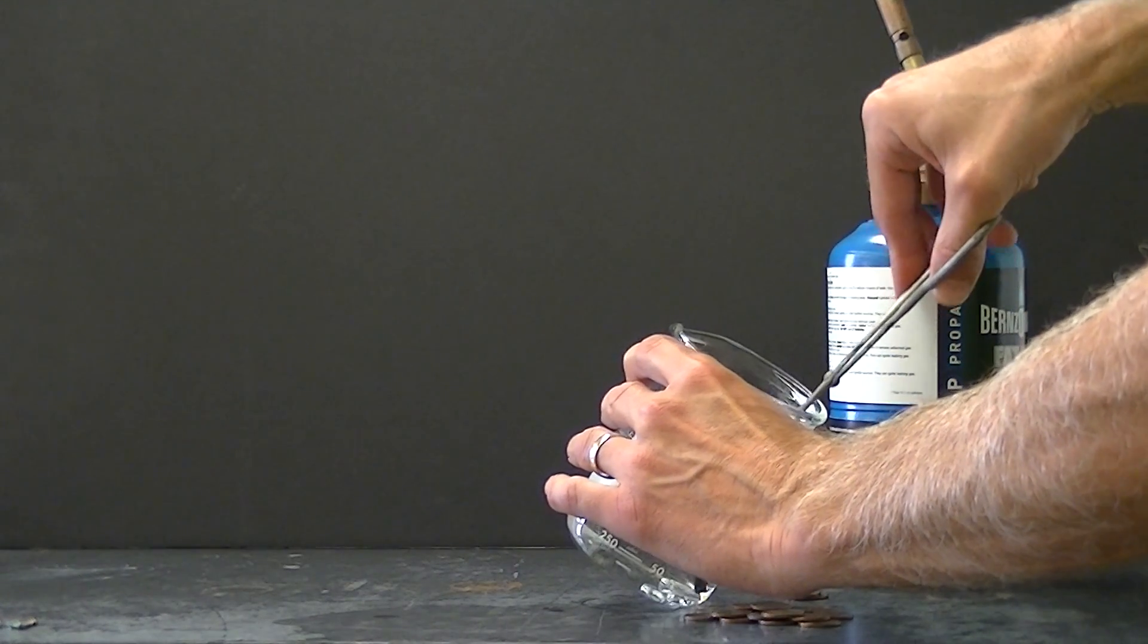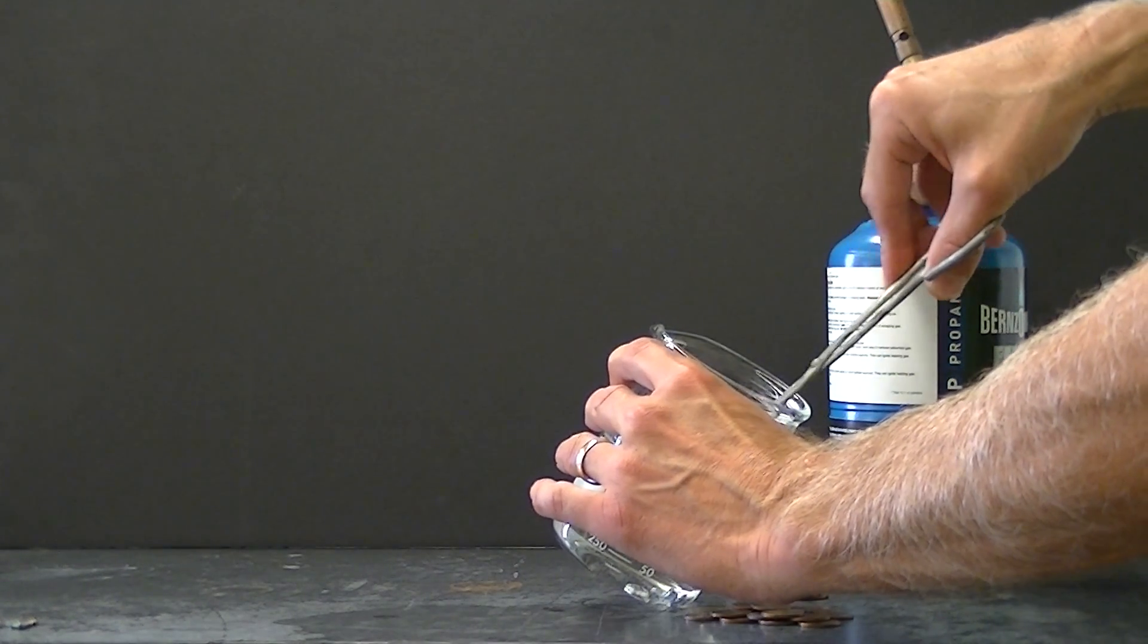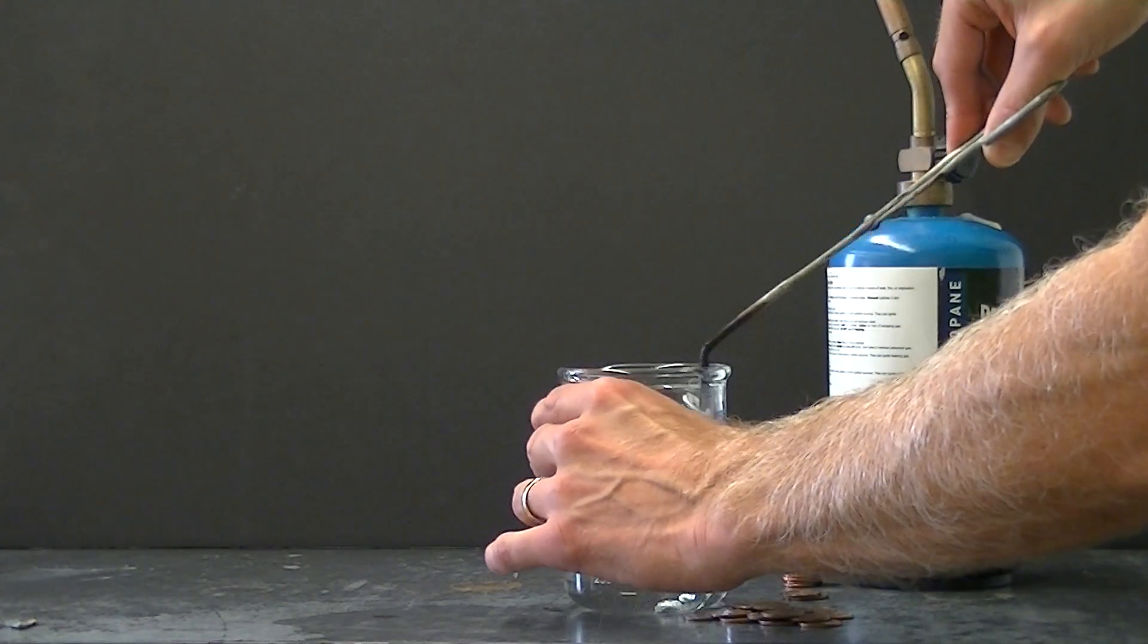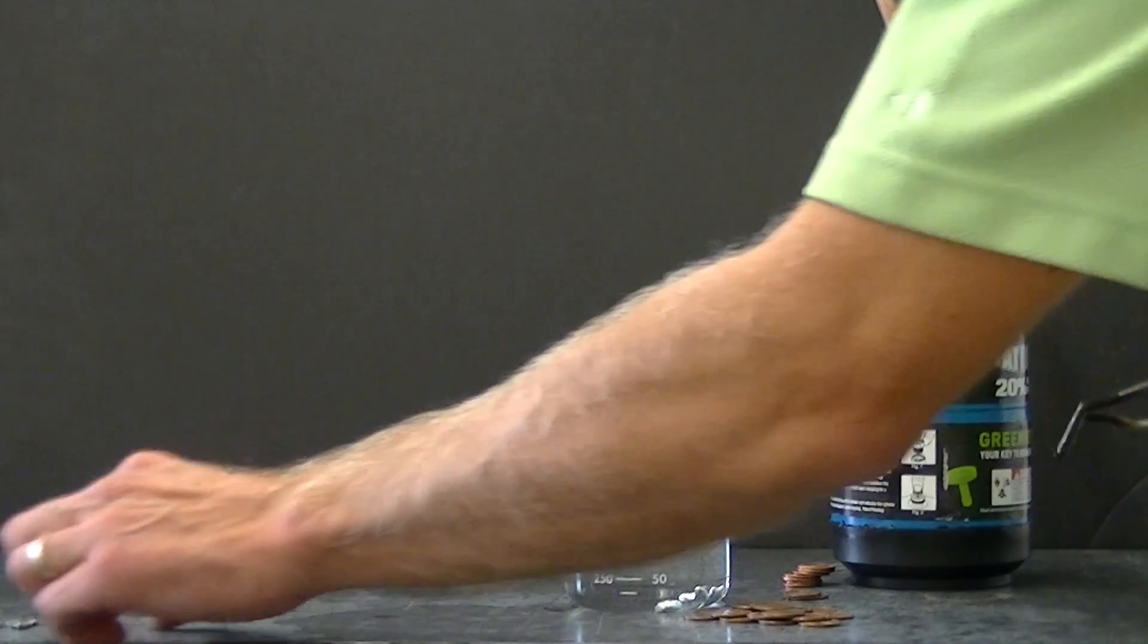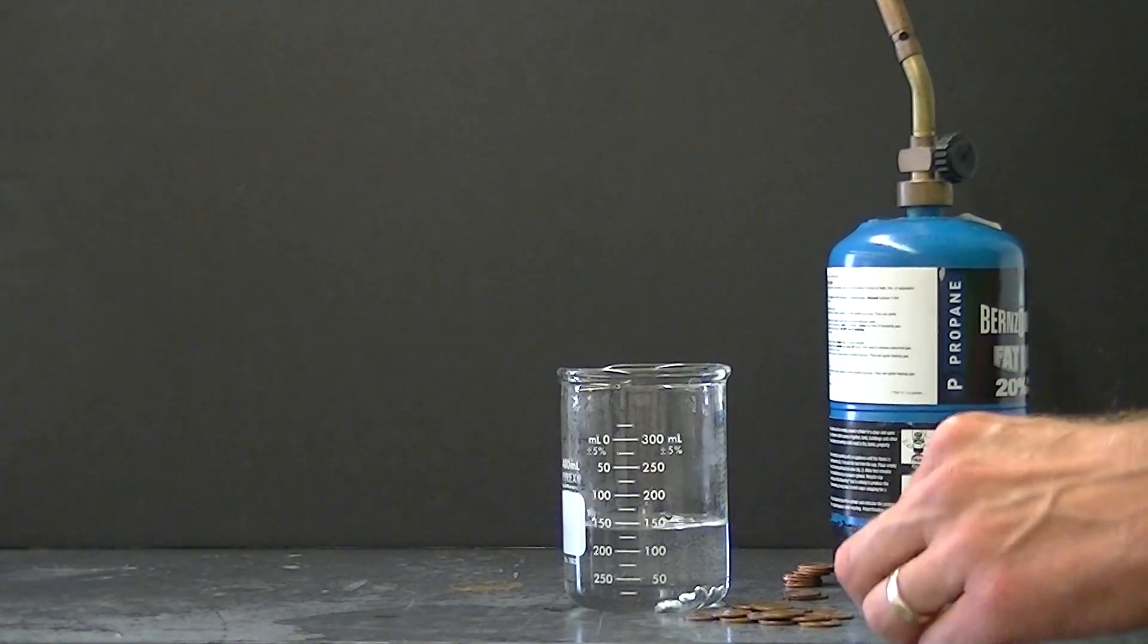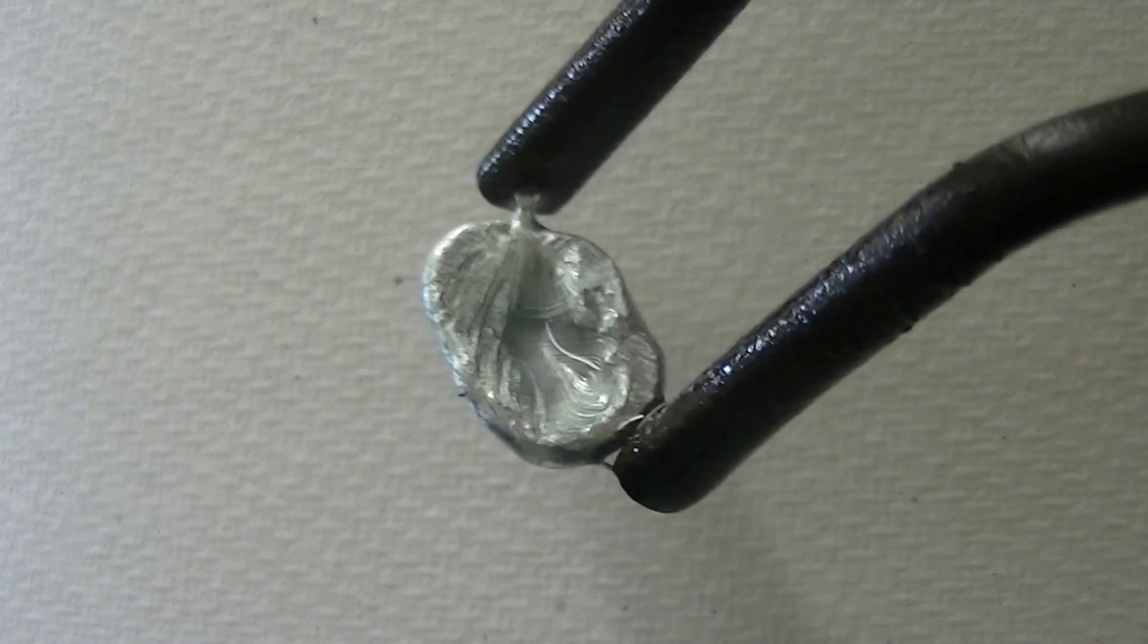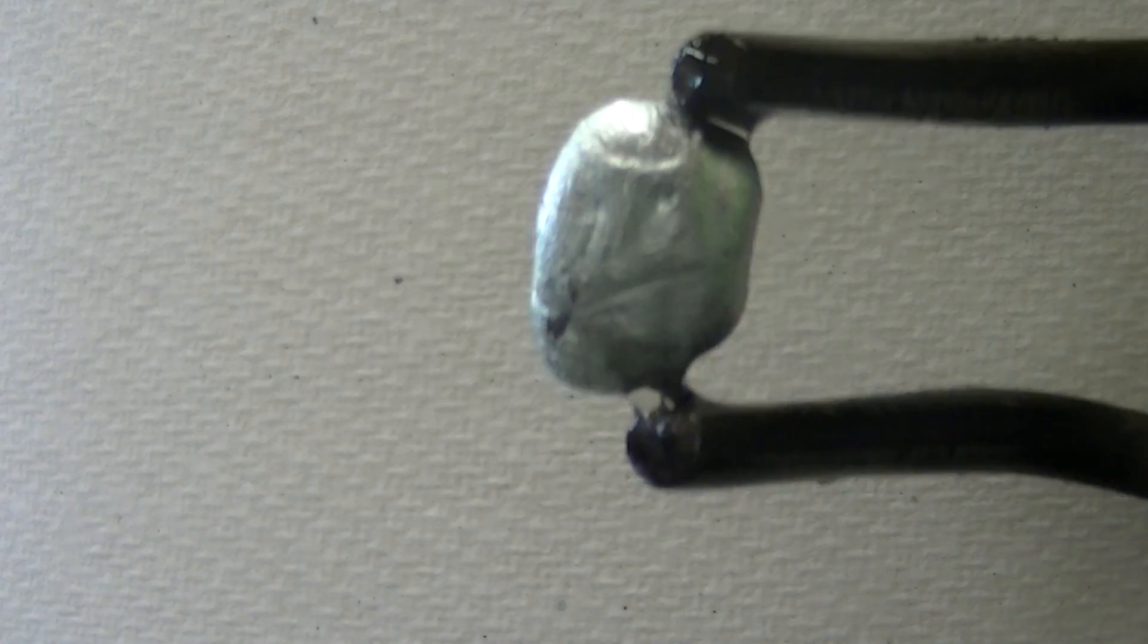I'll go ahead and show you some of these zinc cores that fell out of the penny and I'm also going to show you the residual copper coat. Here is the zinc core. It's a beautiful shiny silver. Look at that, it's pretty.